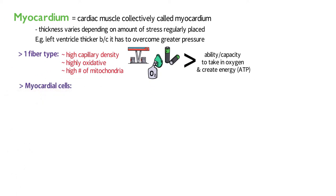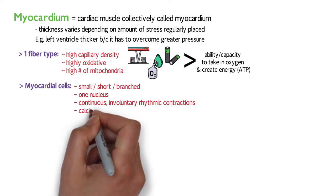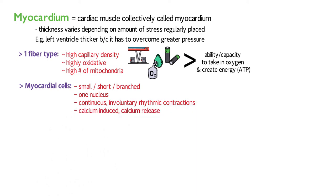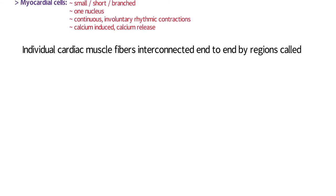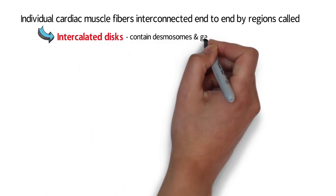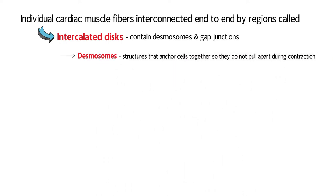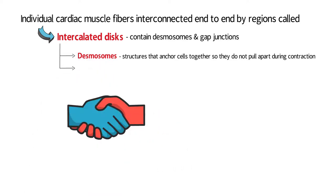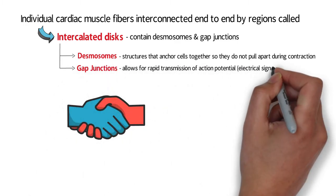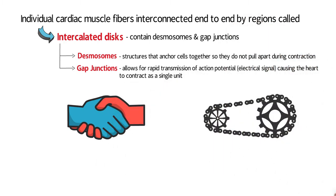Myocardial cells have a small, short, branched appearance with one nucleus. They allow continuous involuntary rhythmic contractions and are calcium-induced calcium release, meaning the activation of calcium release is brought on by calcium. Individual cardiac muscle fibers are interconnected end-to-end by regions called intercalated discs, which contain desmosomes and gap junctions. Desmosomes anchor the cells together so they don't pull apart during contraction — think of holding your kid's hands so they don't get separated. Gap junctions allow for rapid transmission of action potential or electrical signal, causing the heart to contract as a single unit — think of a bicycle chain being moved by multiple gears.